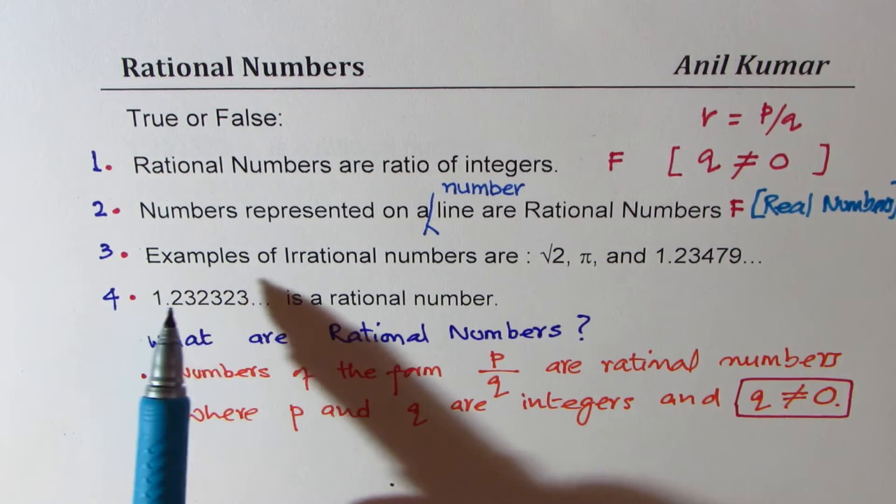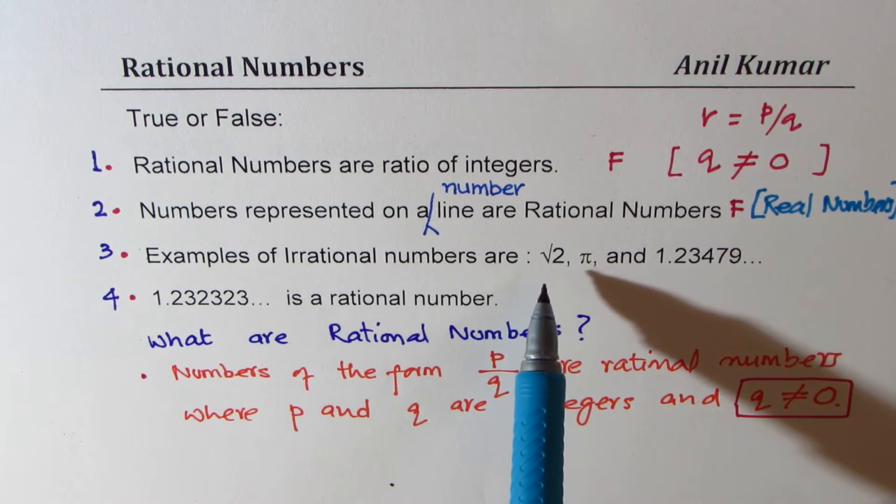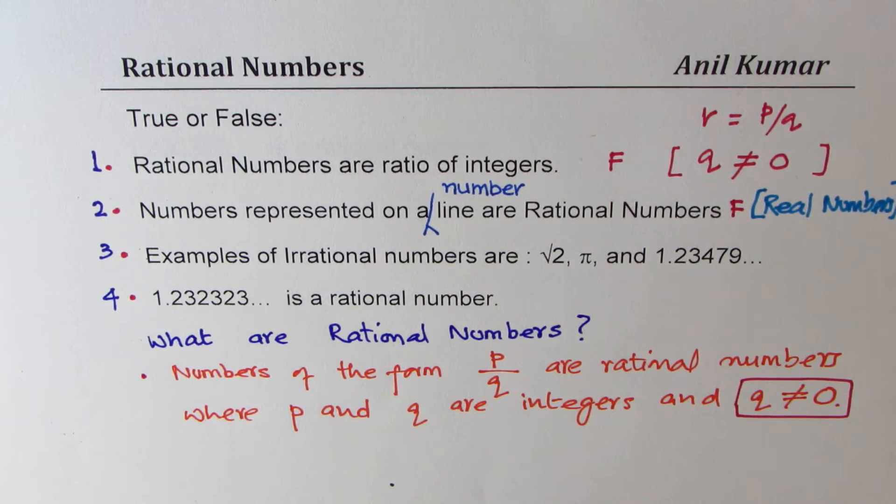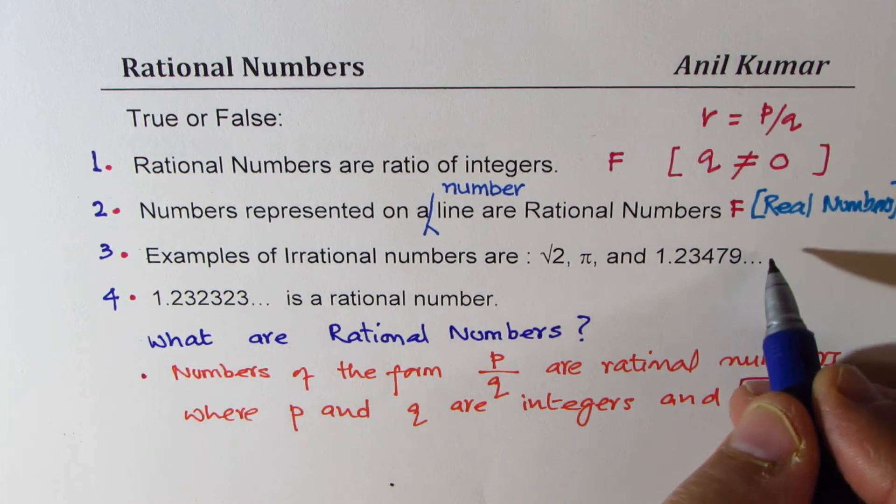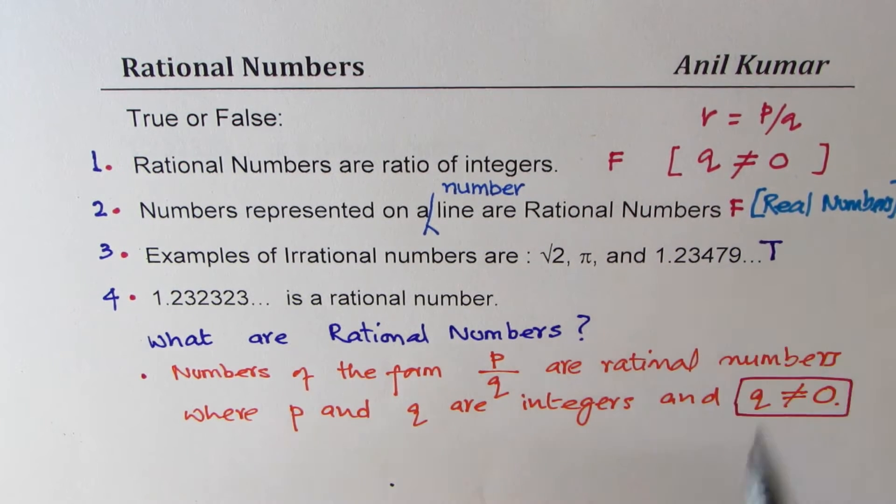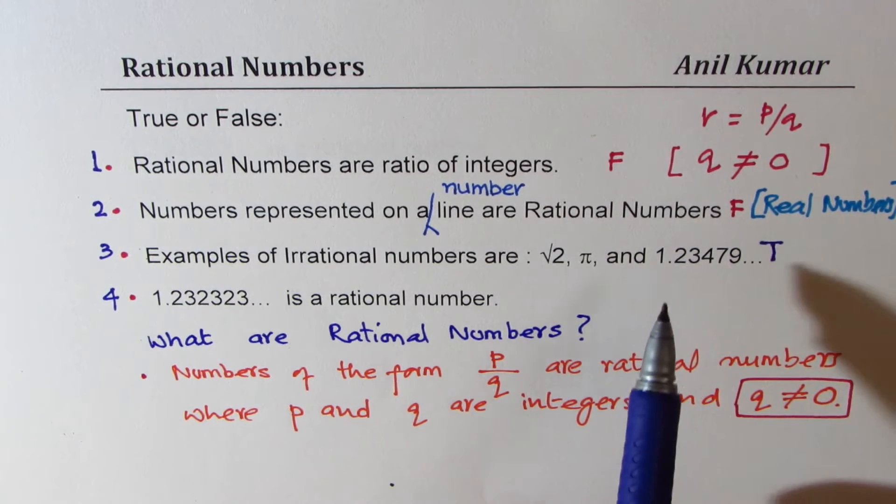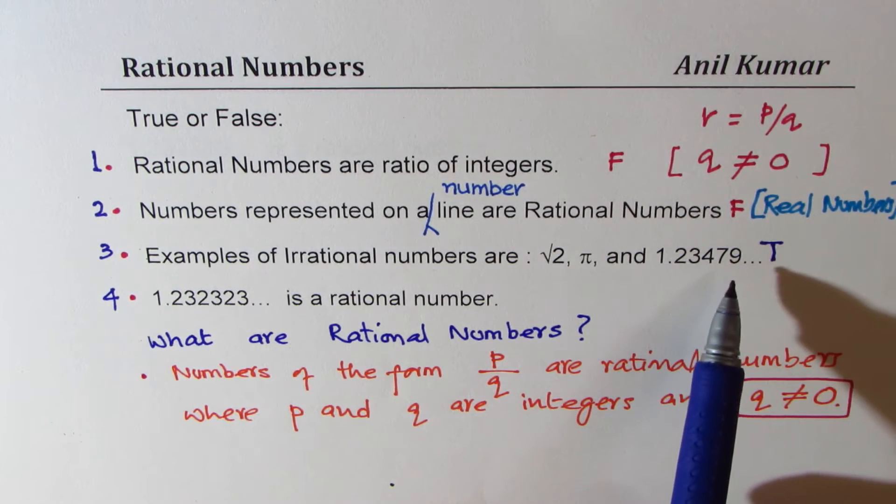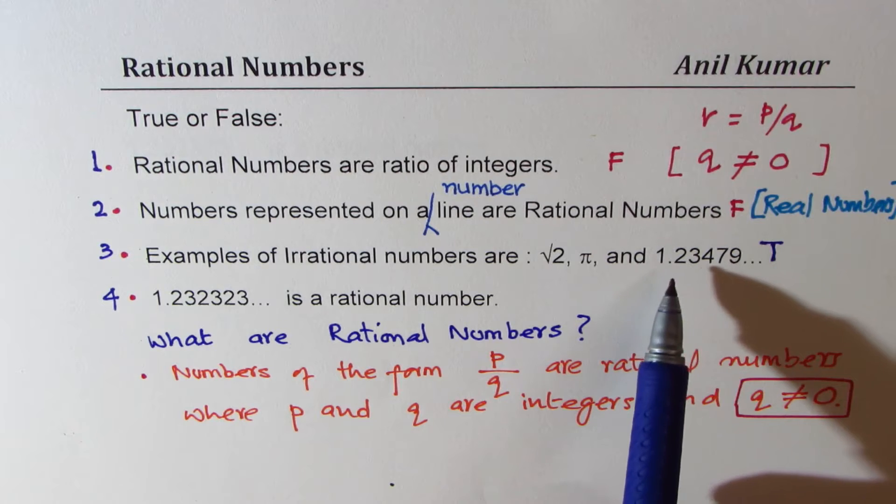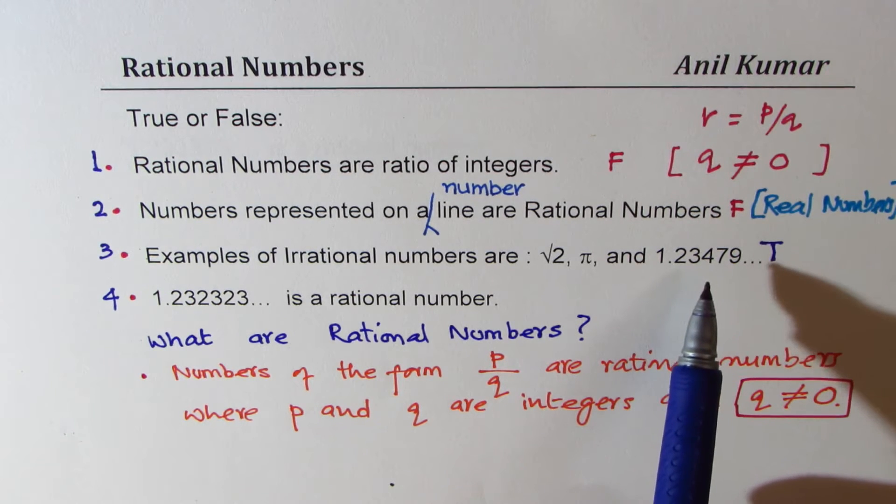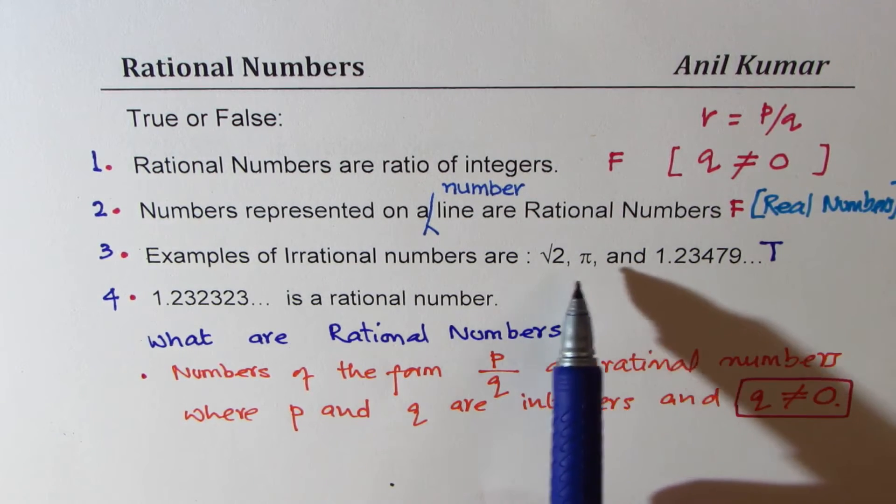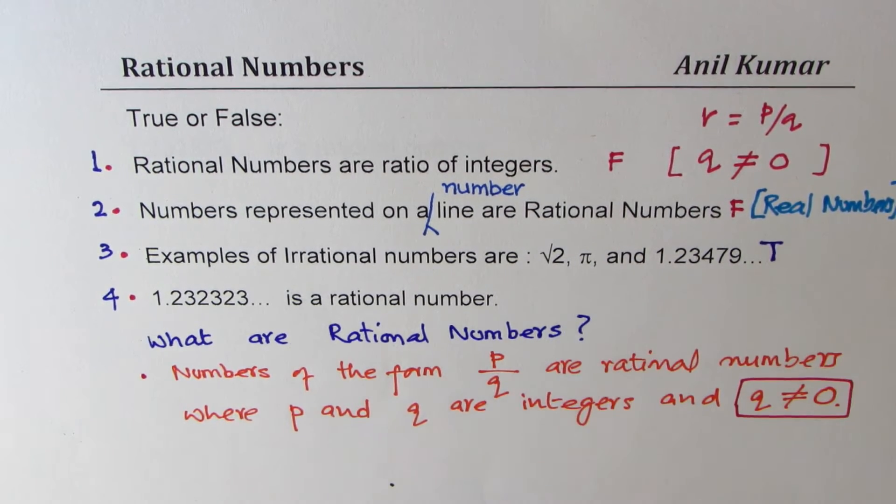Question 3: Examples of irrational numbers are square root 2, pi, and 1.23479, etc. Well, this statement is indeed true. Now, 1.234979 is something which is not type of a repeating decimal. Therefore, it is irrational. So all these numbers are irrational.